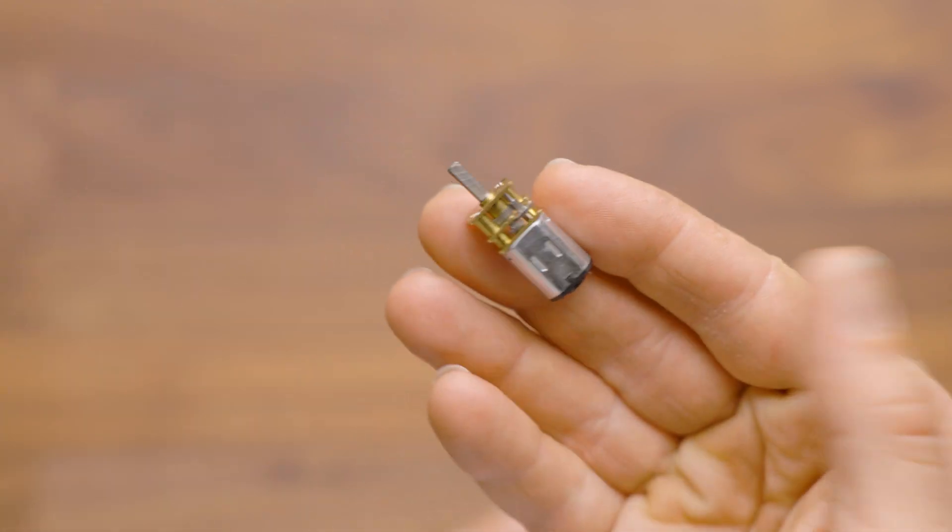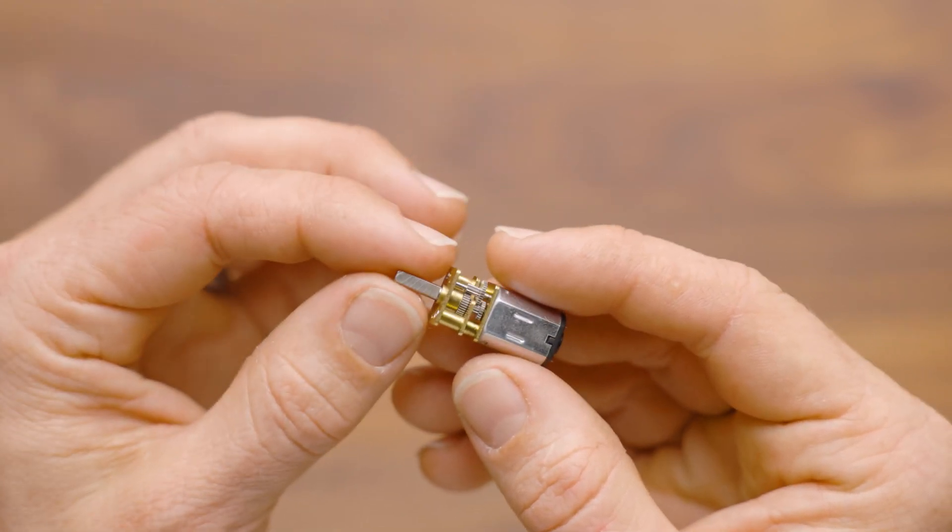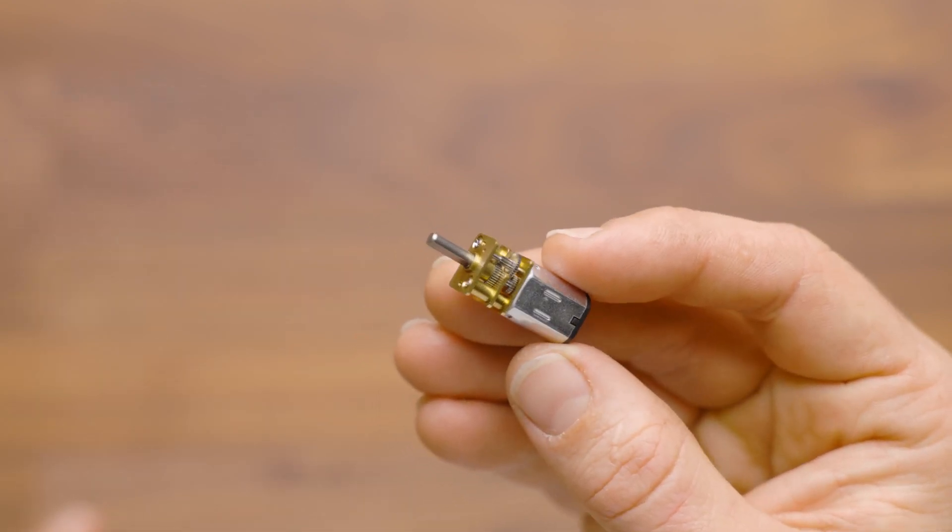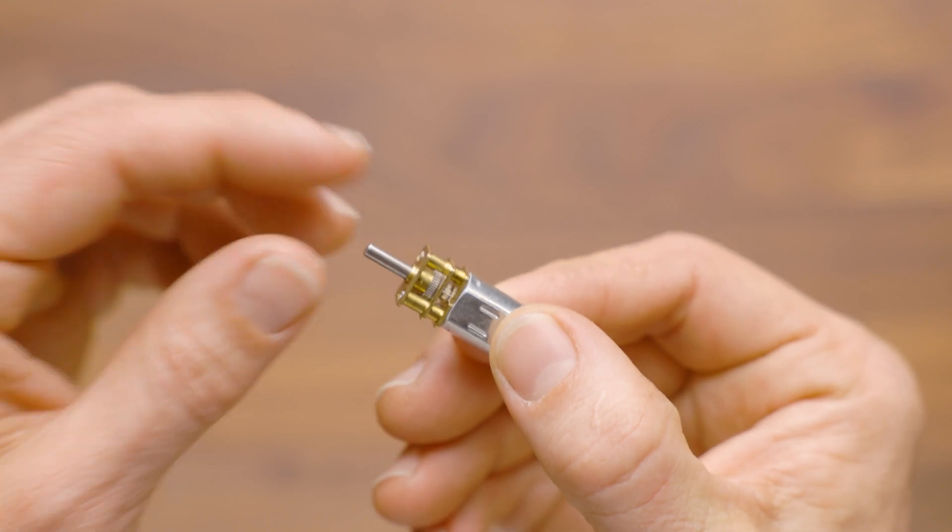They come in a variety of RPMs from 300 RPM to 5,000 RPM. Depending on your blaster, that will vary your rate of fire.